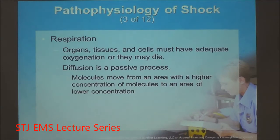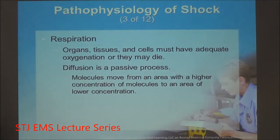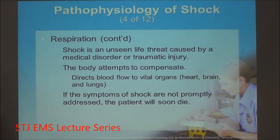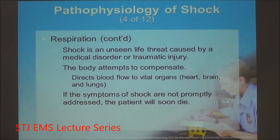Blood continues to venules, up to the veins and great vessels, and the whole process starts over — keeping cells with a constant supply of oxygen. When pressures can't be sustained, oxygen fails to reach the capillaries, CO2 drops, lactic acid builds up, and the body becomes metabolically acidotic — the hallmark of shock.